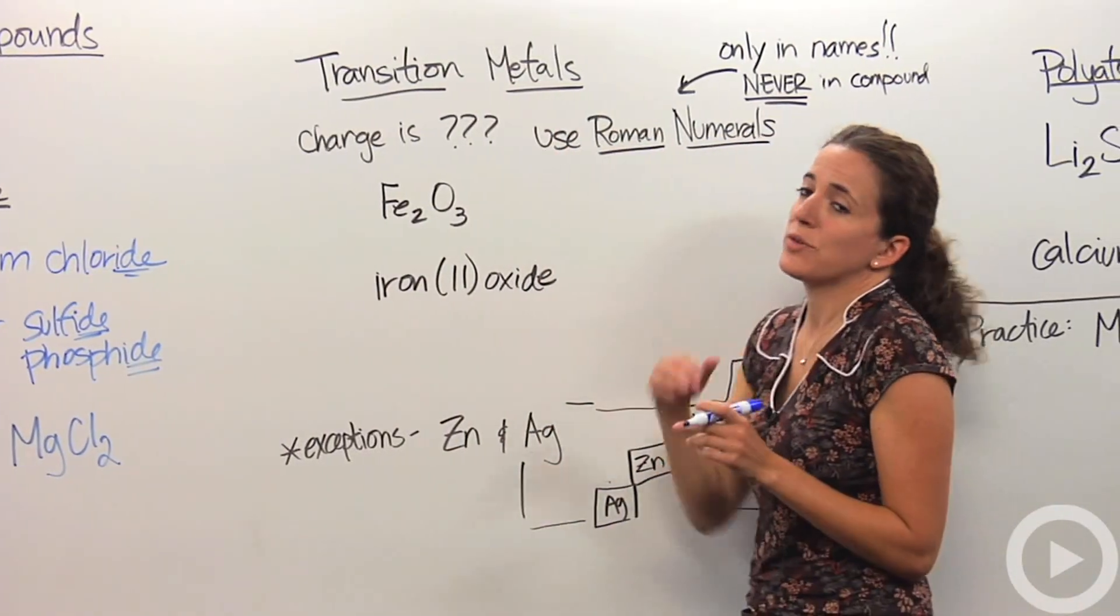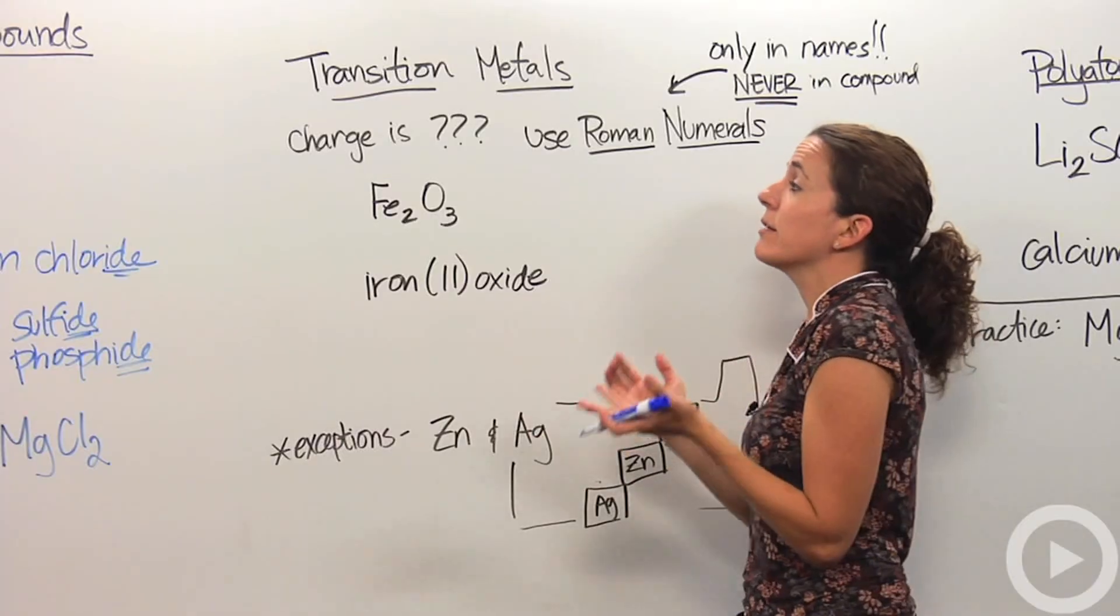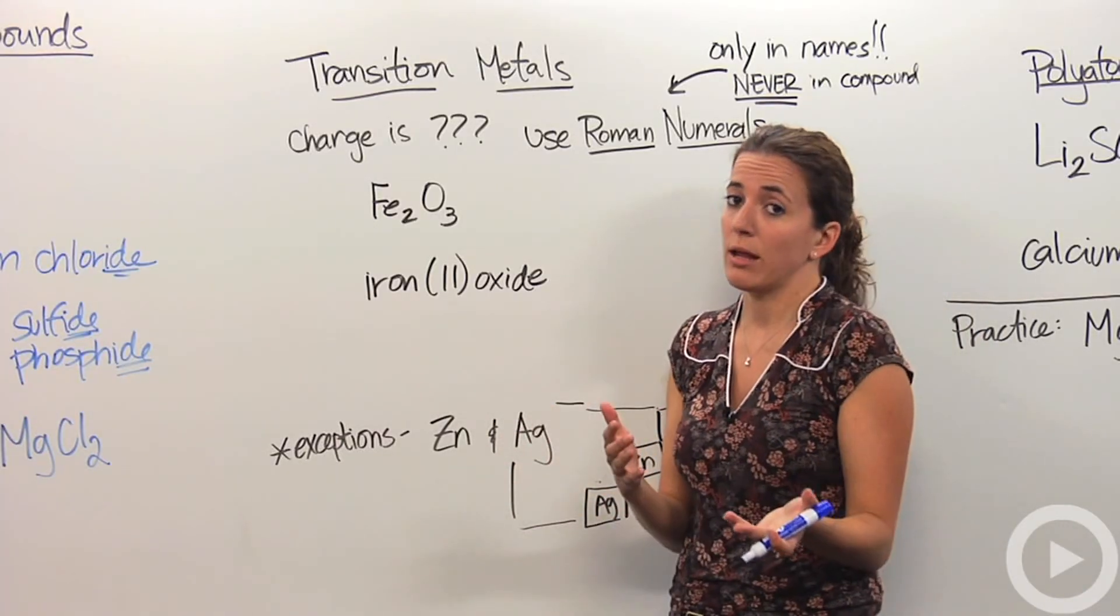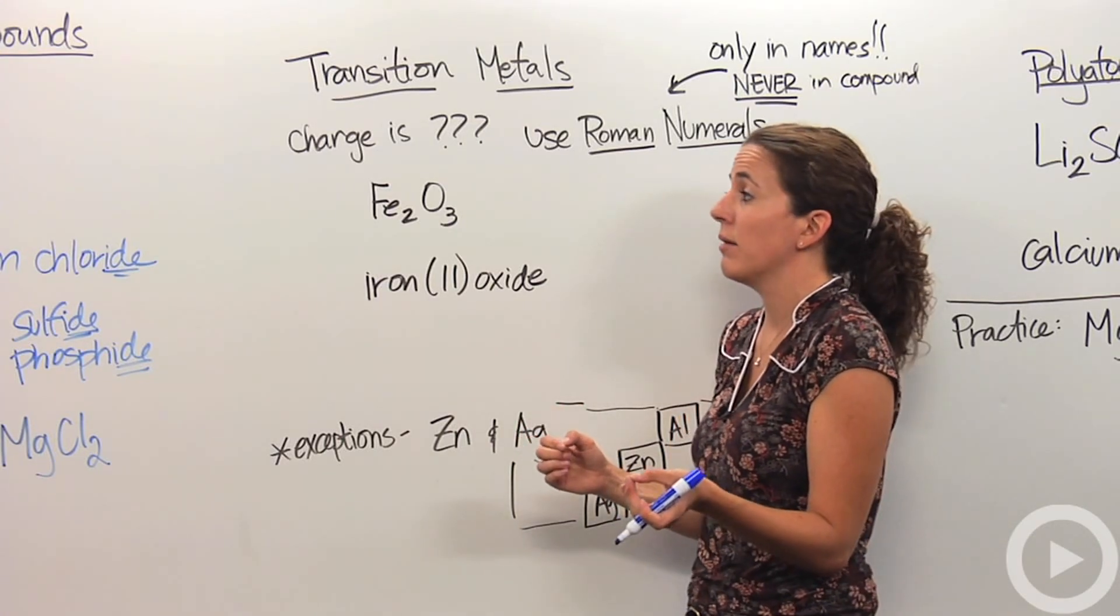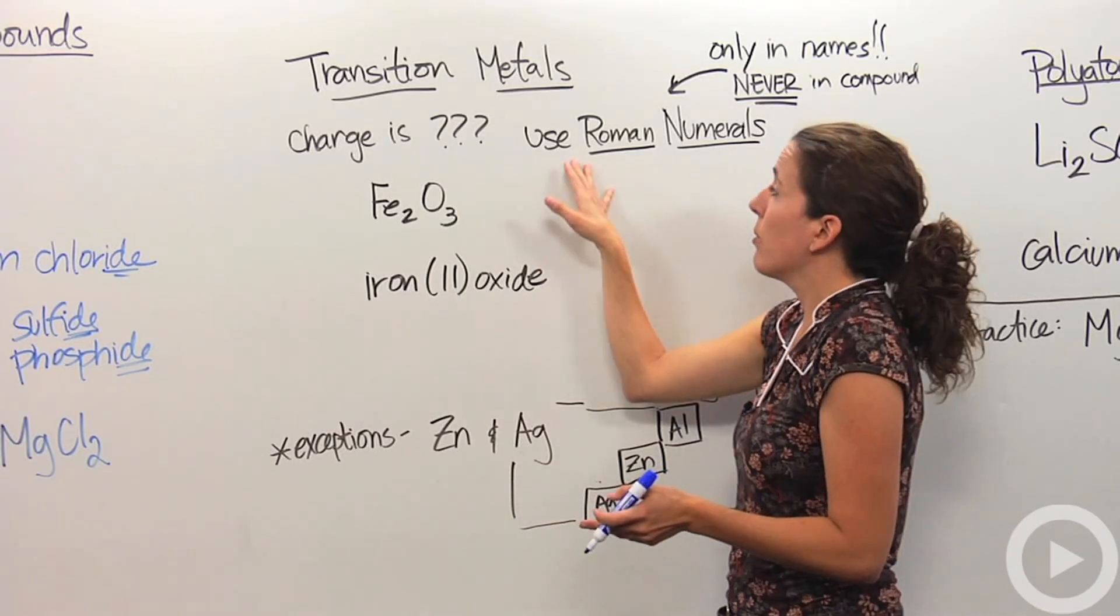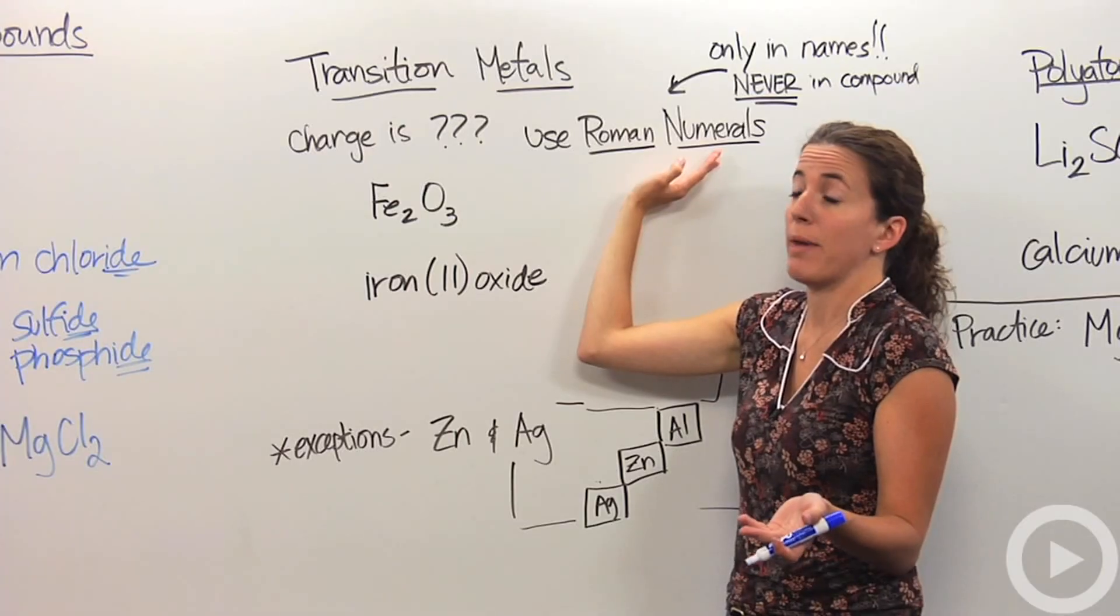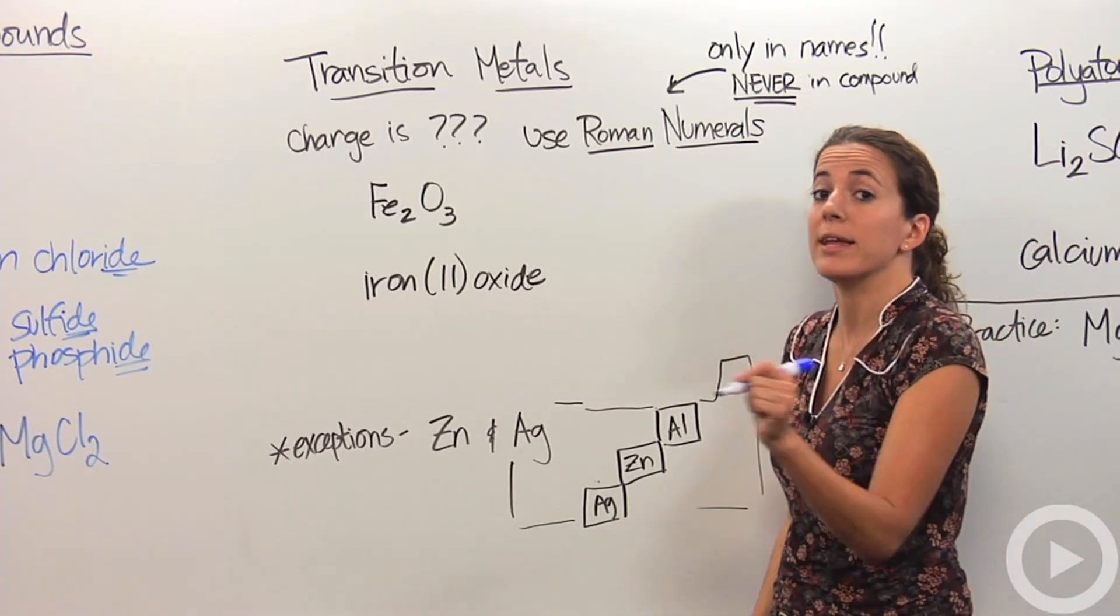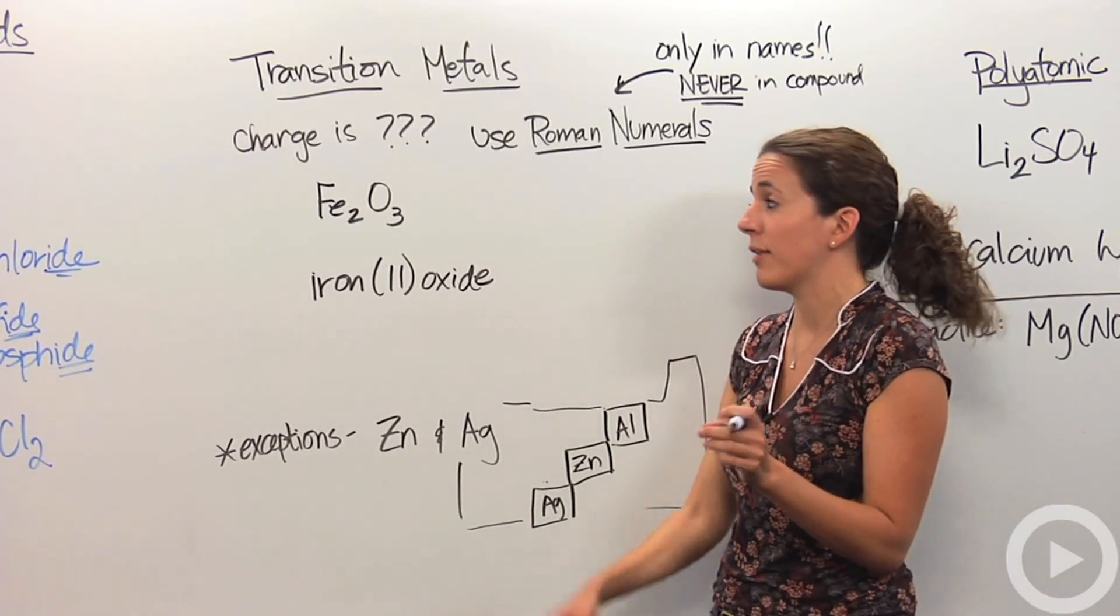But what happens when we come across transition metals? Transition metals are the guys in the middle of the periodic table. They're called transition metals because their oxidation number or their charges are constantly changing. They don't have a definite charge. So how are we going to distinguish which charge we're going to use? We're going to use roman numerals to describe what the charge is of that particular metal. You're only going to use the roman numerals when you're writing out the actual name. You're never going to use the roman numeral when you're actually writing out the formula.